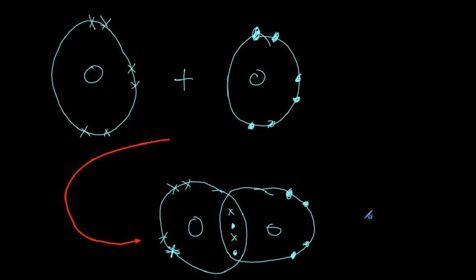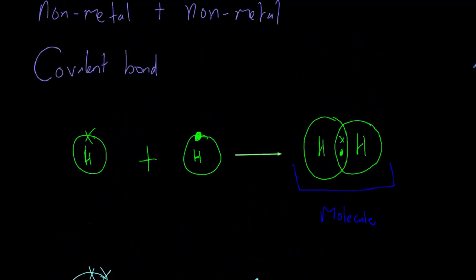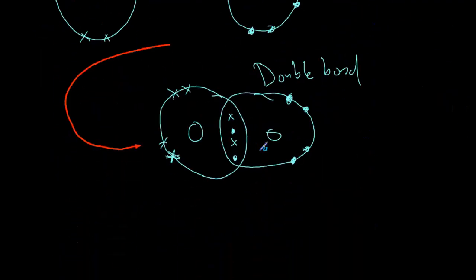Something to note here is that the fact that we have shared two pairs of electrons rather than one pair of electrons makes this a double bond, a double bond rather than a single bond. The hydrogen has shared one electron. So this is a single bond. One electron each or one pair of electrons makes a single bond. Two pairs of electrons makes a double bond.